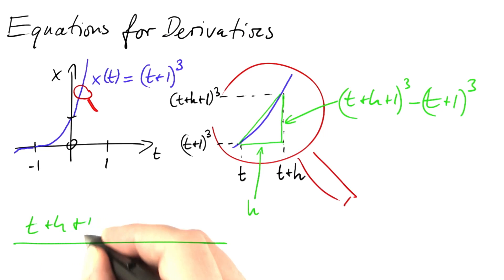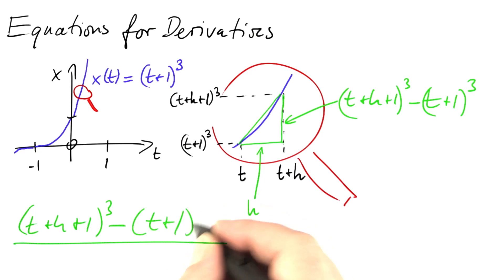So let's write down the ratio: t plus h plus 1 to the third power minus t plus 1 to the third power divided by h.